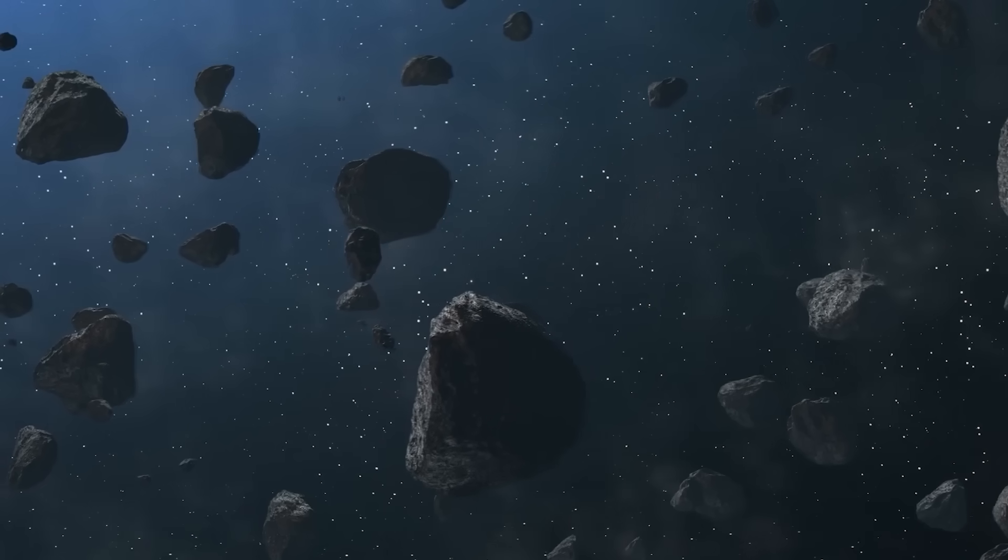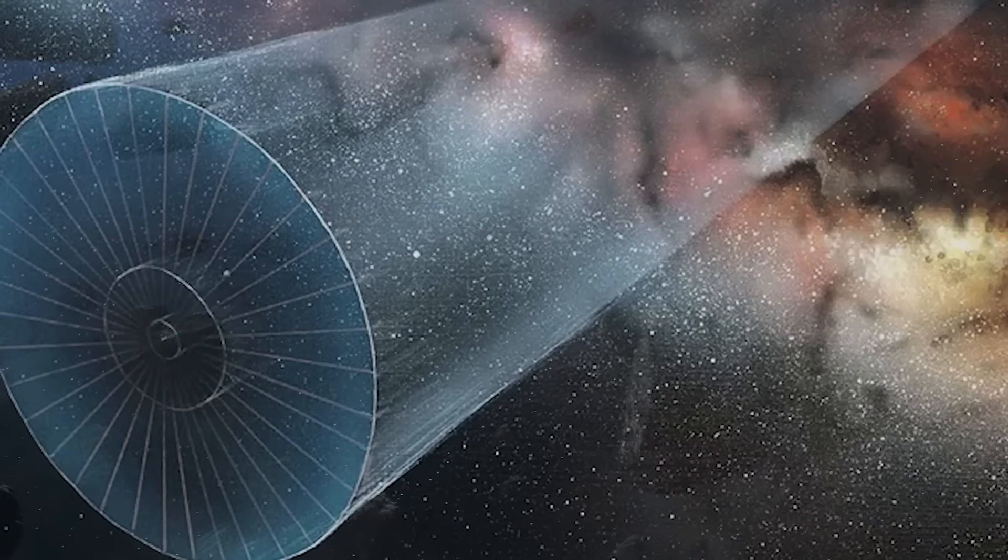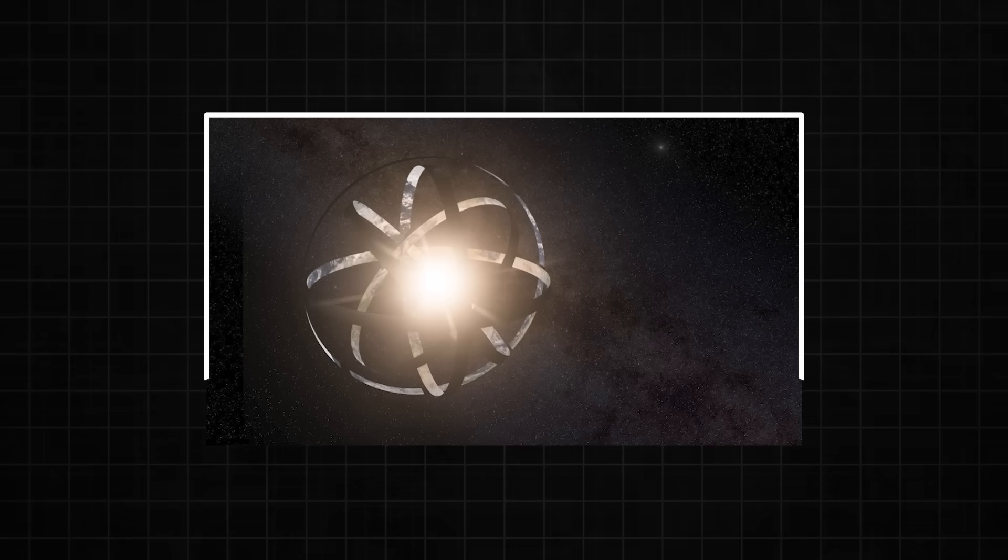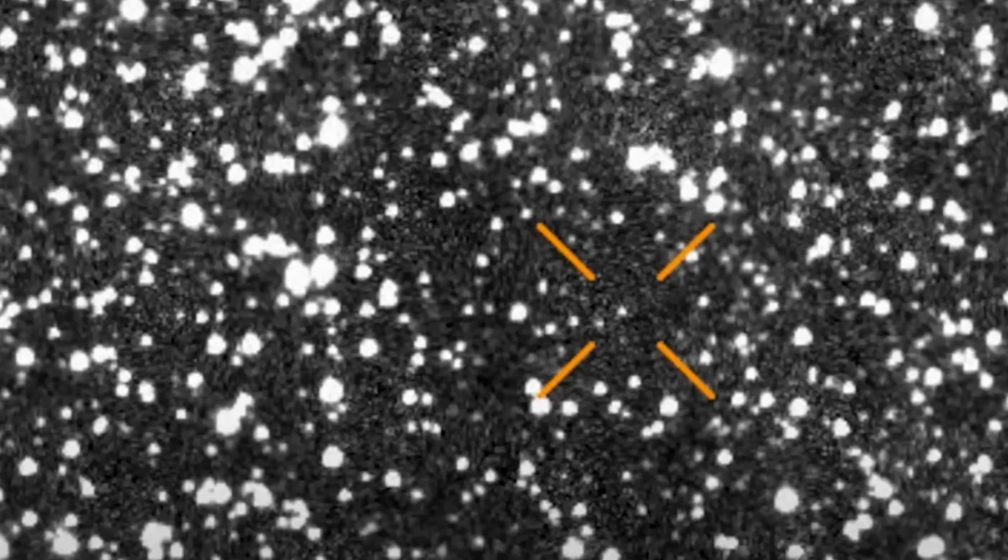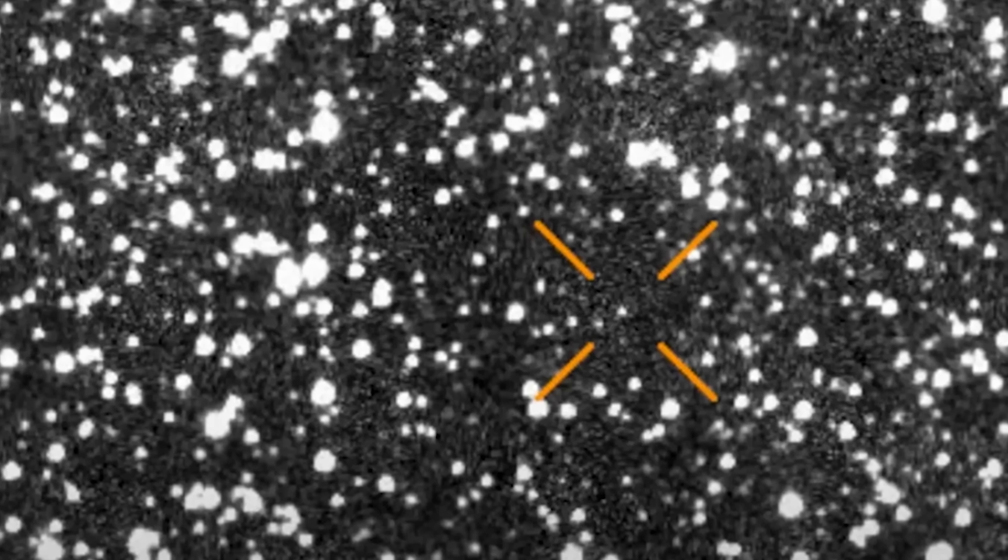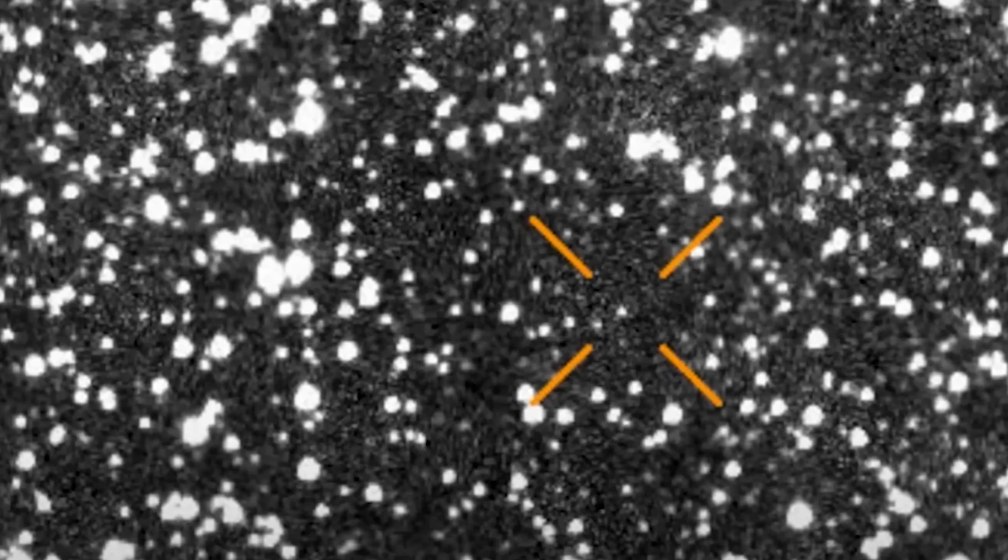The disintegration of 3i Atlas could be a demonstration of technology so advanced it looks like magic to us. It could be a warning about the fragility of existence, or it could be a key. Perhaps the way it broke apart, the trajectory of its debris contains information, a map, a mathematical equation, a message.